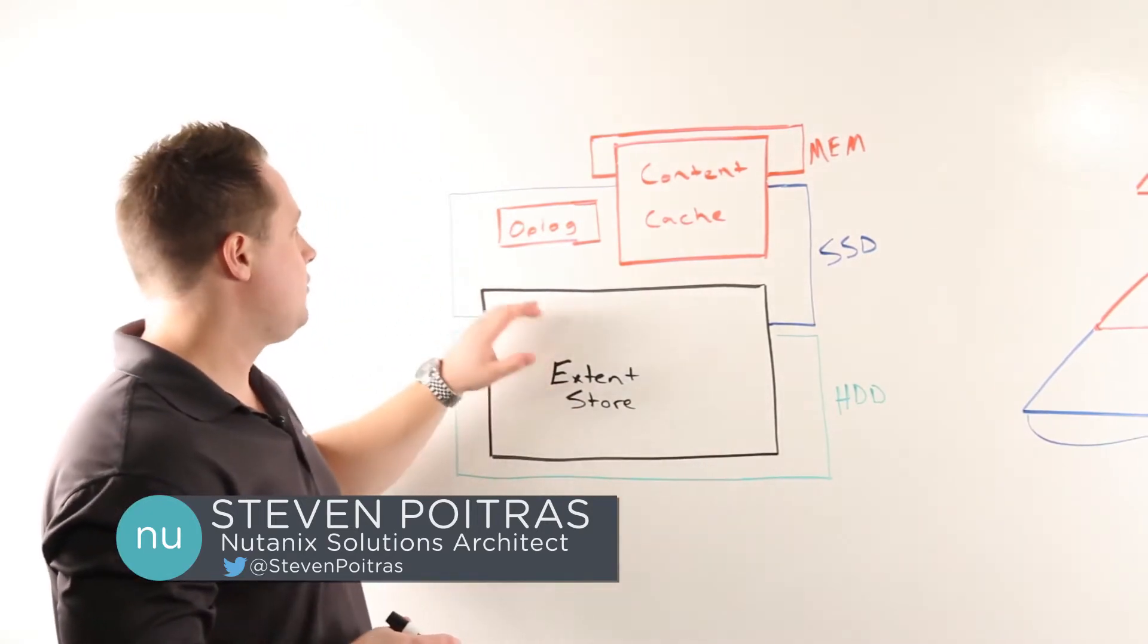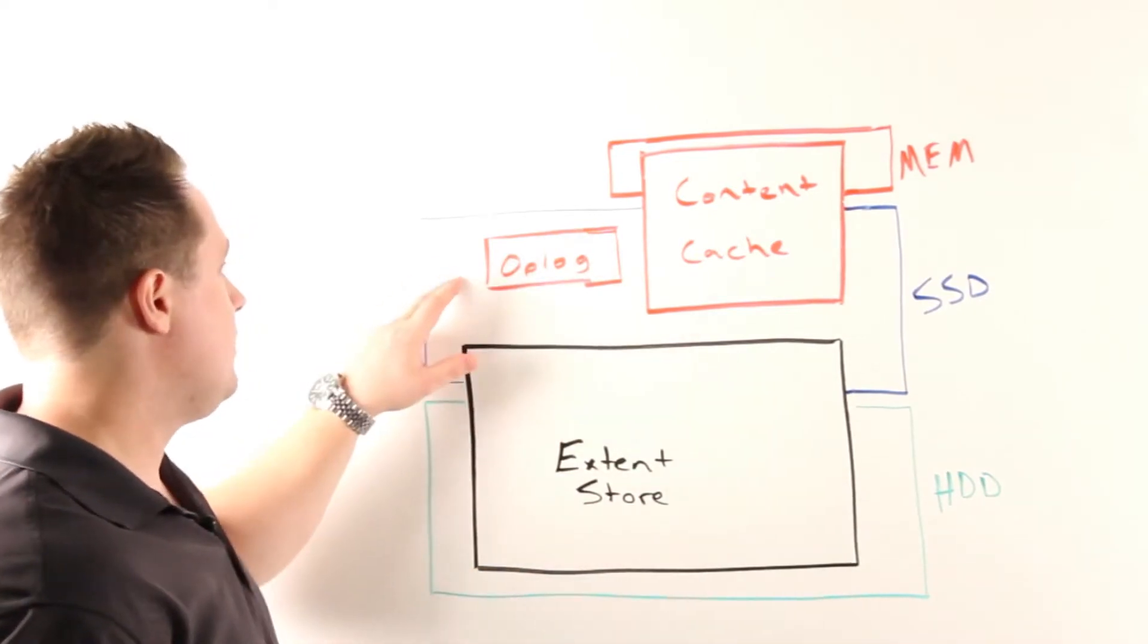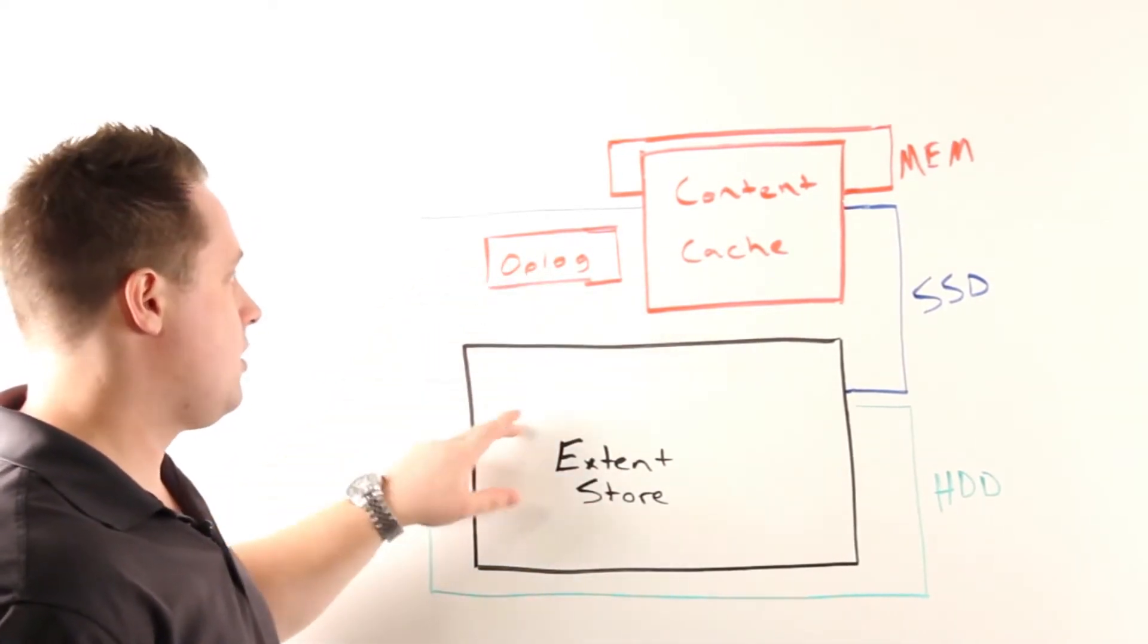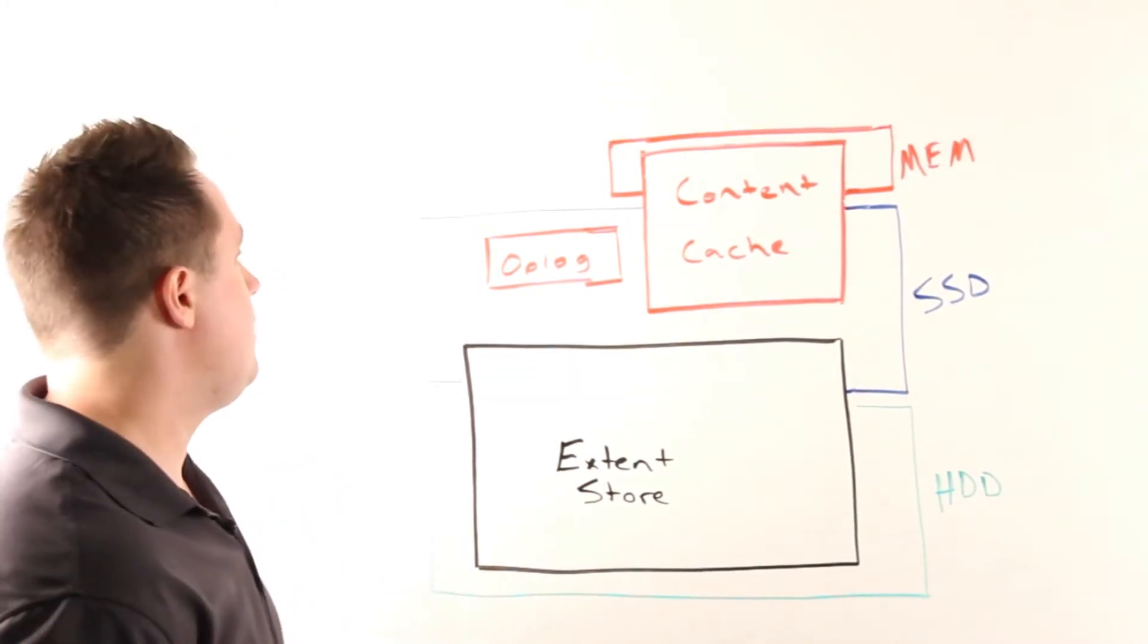What we have here on the whiteboard is first our NDFS or Nutanix I.O. path. We can see our traditional components like our op log, extend store, and content cache. Essentially the same I.O. path is leveraged for Nutanix deduplication.